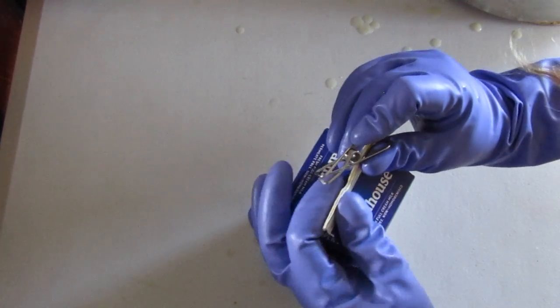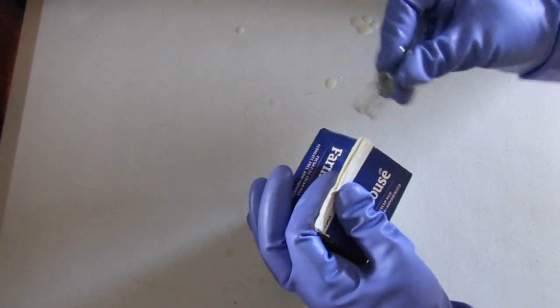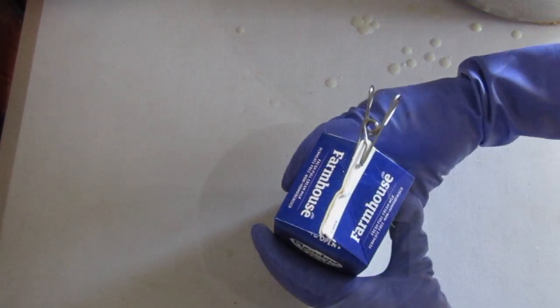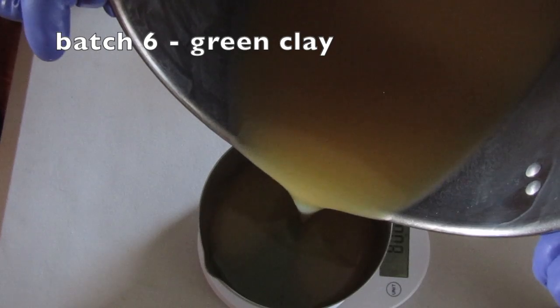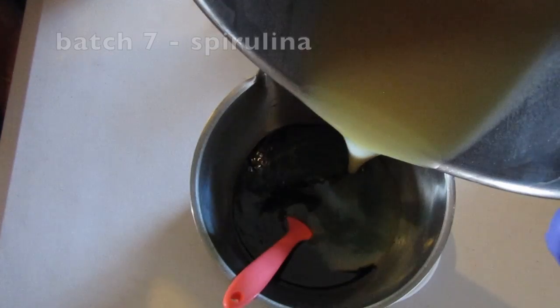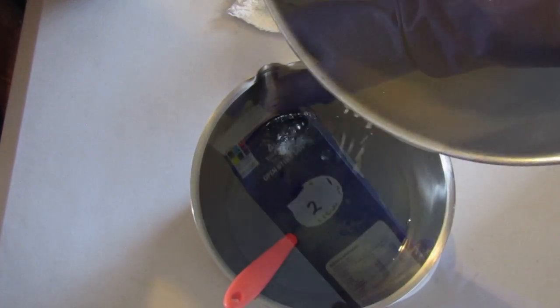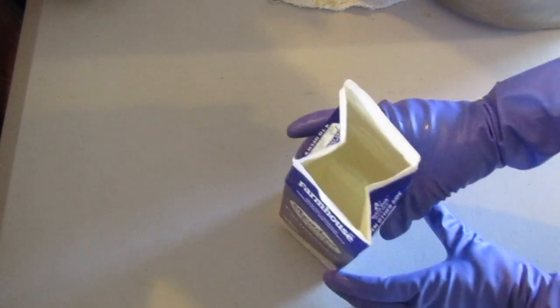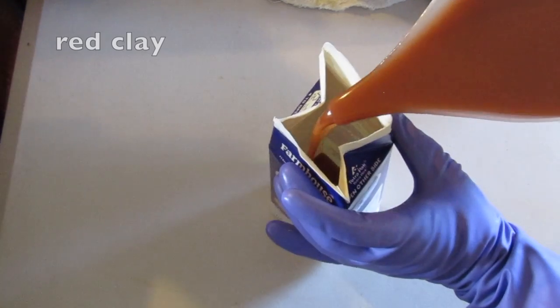I closed the cartons with clothes pegs to exclude air and reduce soda ash. At this point I poured the soap according to which batch was setting up first.